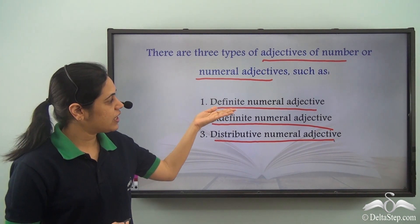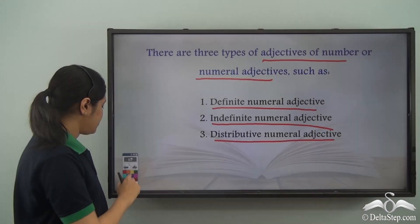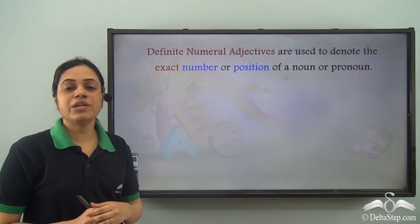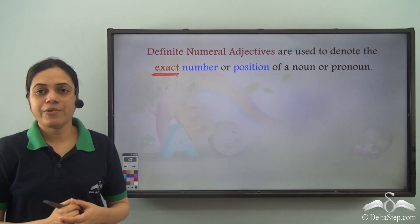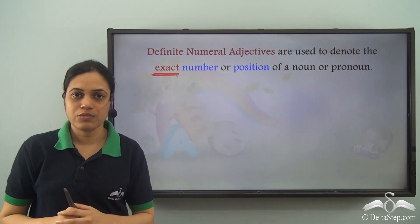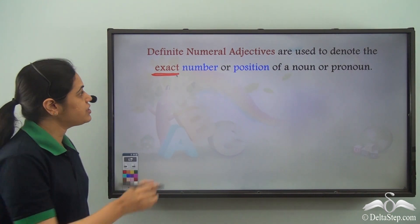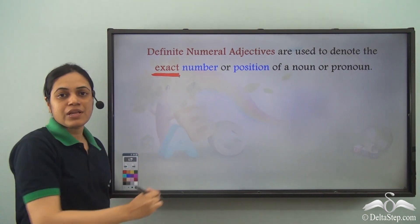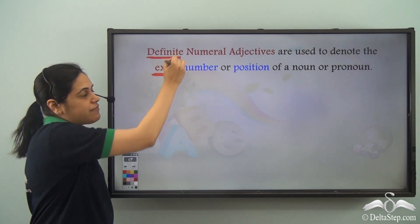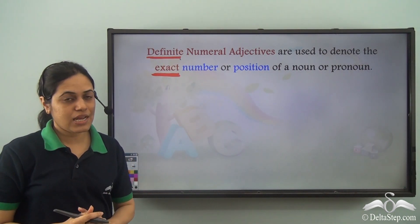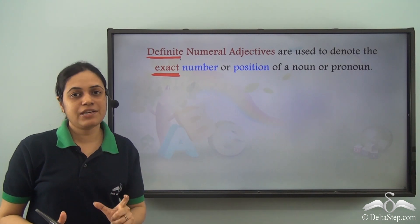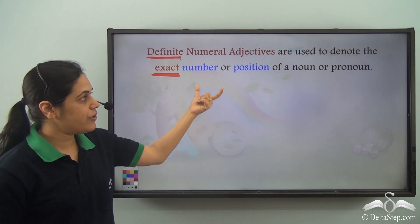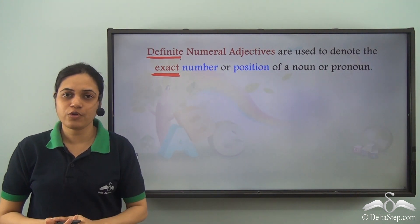First we come to definite numeral adjectives. Definite numeral adjectives are used to denote the exact number or position of a noun or pronoun. The keyword here is 'exact,' and because of this it is named definite — because it is telling us the exact number or position.